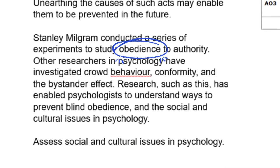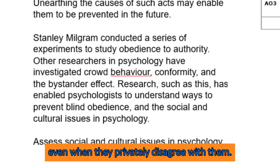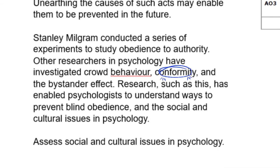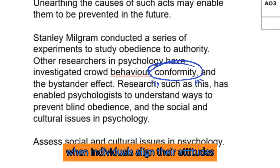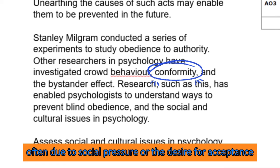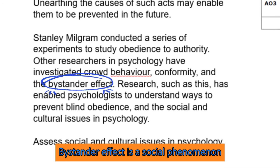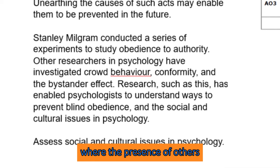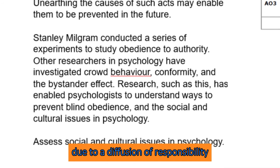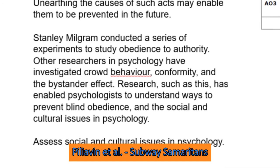Obedience, including blind obedience to authority figures. Compliance, when someone goes along with a group majority even when they privately disagree with them. And conformity, when individuals align their attitudes, beliefs, and behaviors with those of a group or social norm, often due to social pressure or the desire for acceptance. And then bystander effect — a social phenomenon where the presence of others reduces the likelihood of an individual offering help in an emergency due to diffusion of responsibility and possibly a fear of social judgment. One of the studies you did was Piliavin et al., and you will need to reference that study in your answer.